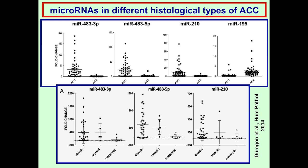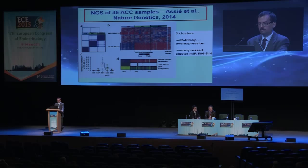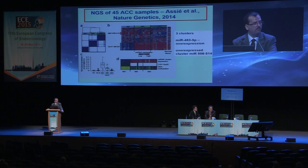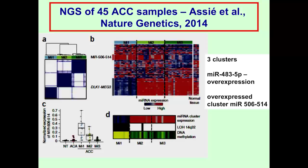Overall, microRNAs are considered to be relatively early players in tumorigenesis, and microRNA dysregulation is considered an early event. I'd like to refer to the study published in Nature Genetics by our co-chairperson — the first and only study to date using next-generation sequencing in adrenocortical tumors. Beside analyzing several other important molecular features, microRNAs were also studied, and three clusters were established that parallel other molecular features. MiR-483-5p overexpression was confirmed, and as a novel finding, the overexpressed cluster of miR-506 to miR-515 was noted — a novel finding that has to be confirmed.